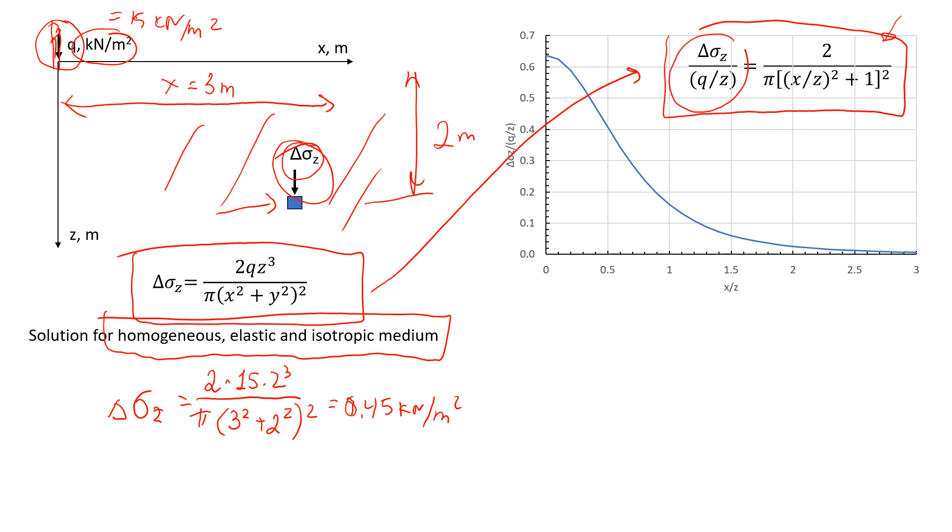I used Excel to get this correlation between the left-hand side and right-hand side components. I changed the ratio x/z, starting from 0, 0.5, 1, and so on. For each value, I calculated the left-hand side component and plotted the data, which looks like this curve.